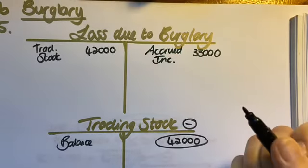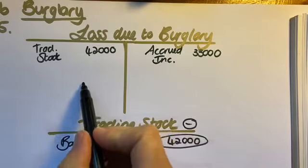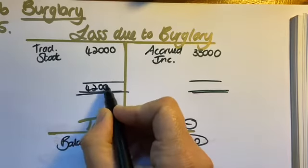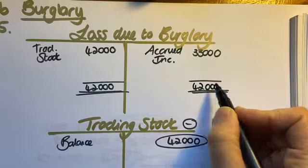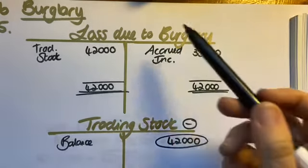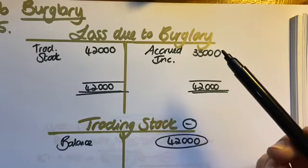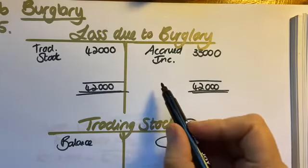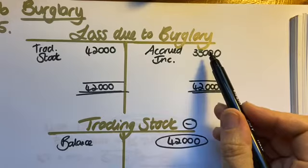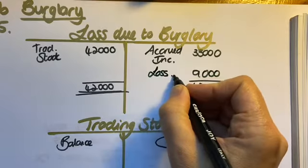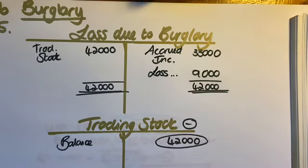Now all you need to do is calculate the loss. Importantly, you don't mention insurance at all — your insurance account is purely for the expense you pay every month for premiums. This is just a claim, and it's additional loss or possibly a small profit. So 42,000 minus 33,000 gives me R9,000 — that's my loss due to burglary.